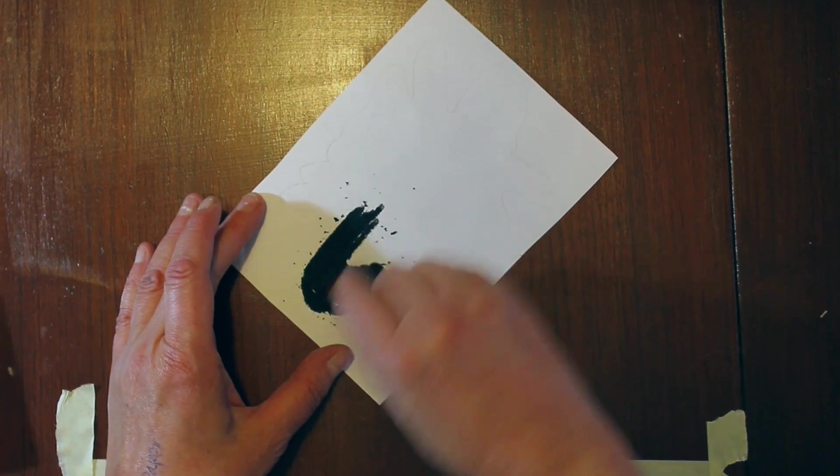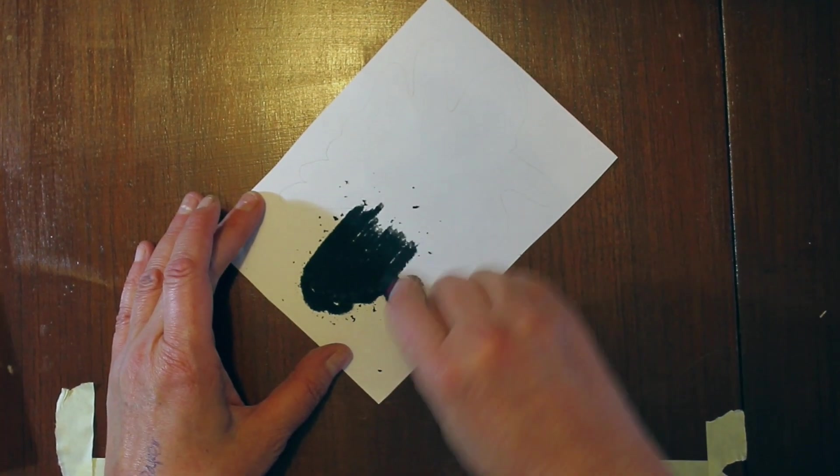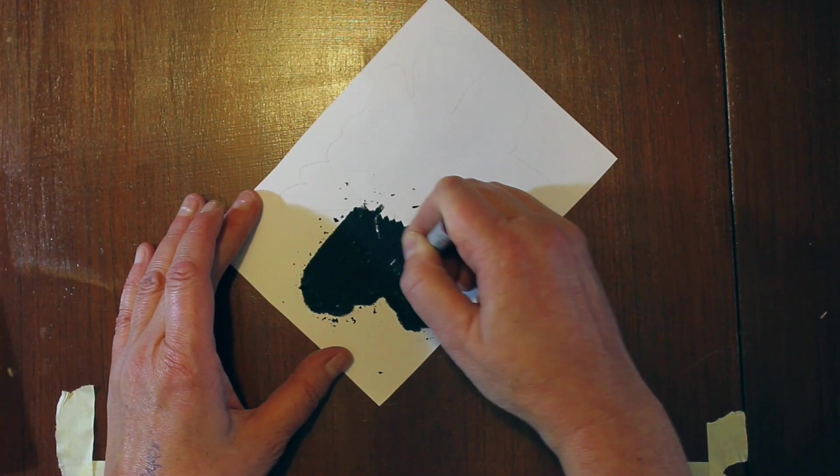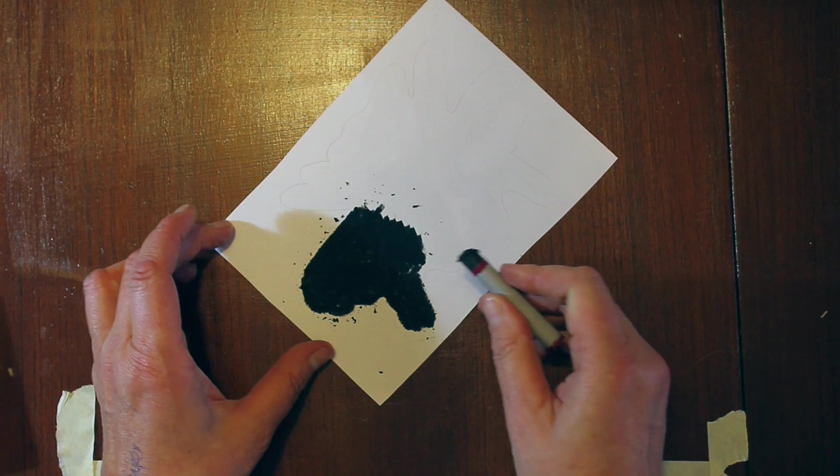It doesn't matter if you go a little bit out of the area, but you want to at least make sure you've got that area covered so that all of the back of the original image will be covered in the black oil pastel.